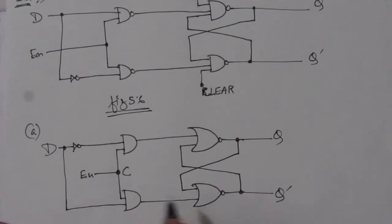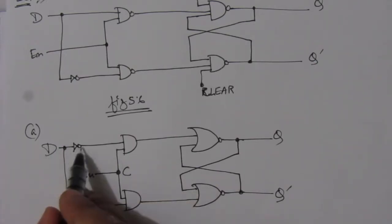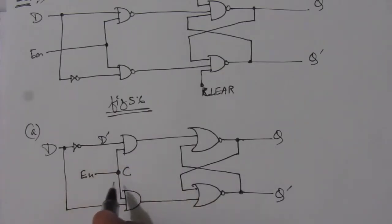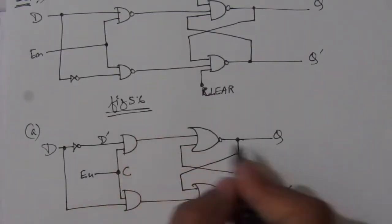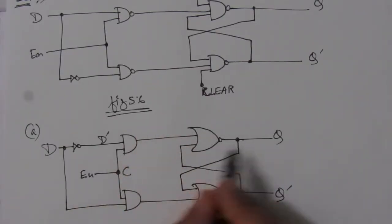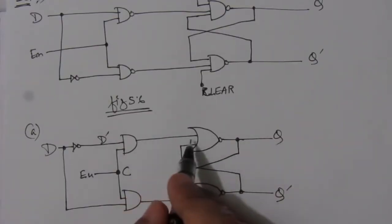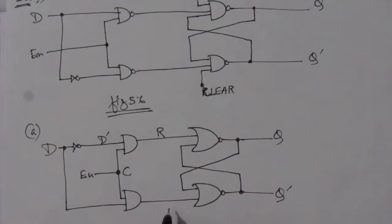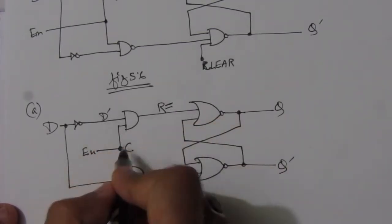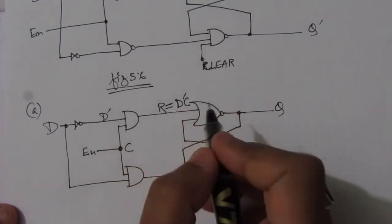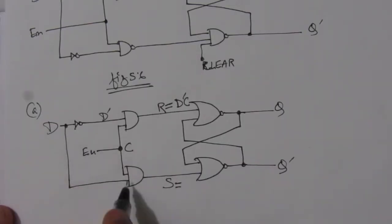Now let us see the expressions. We have D and D-complement. C is one input, so the upper AND gate gives D-bar·C. For the SR latch using NOR gates, the upper input corresponds to R and the lower to S. So R = D-bar·C and S = D·C.